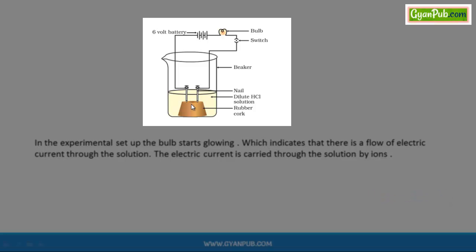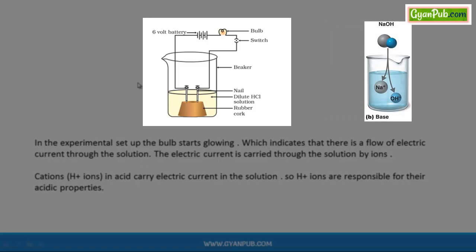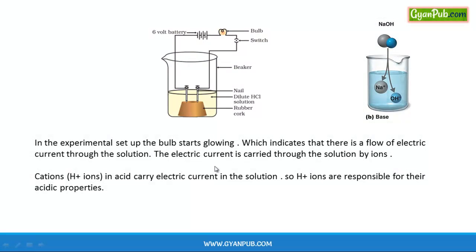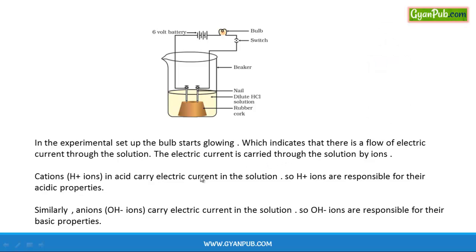This electric current is carried through the solution by the ions. These ions are produced due to the dissociation of hydrochloric acid in water. The H+ ions carry electric current and are responsible for the glowing of the bulb in acid solutions. Similarly, in a basic solution, the OH- ions are responsible for the glowing of the bulb. So H+ ions are responsible for acidic properties and OH- ions are responsible for basic properties.